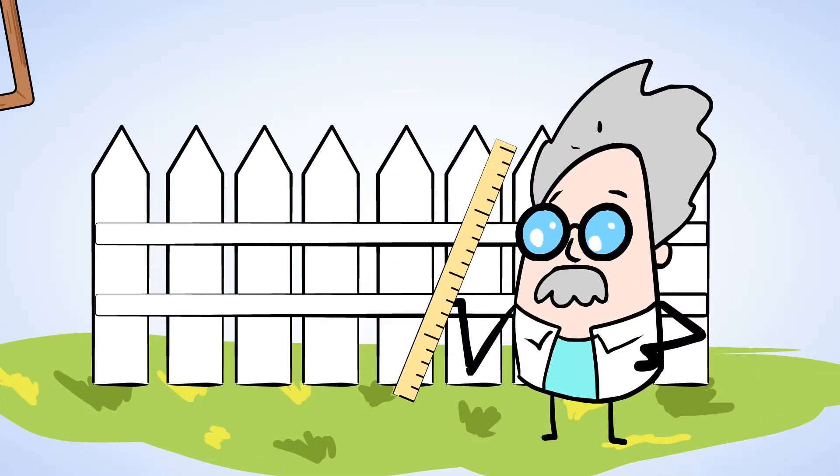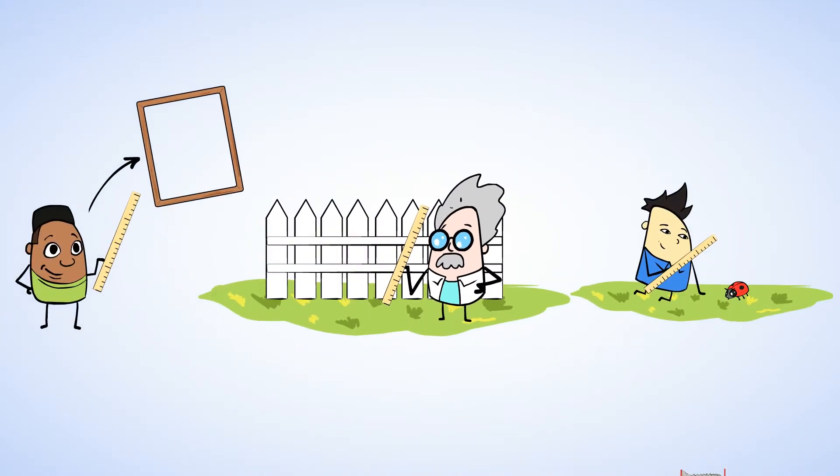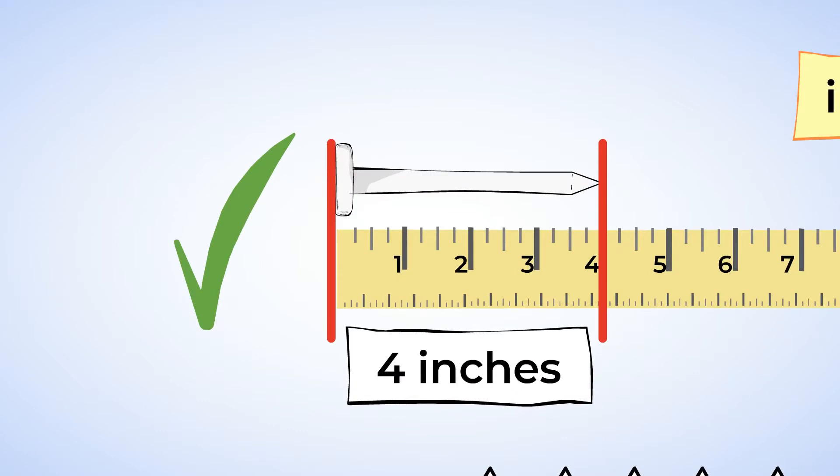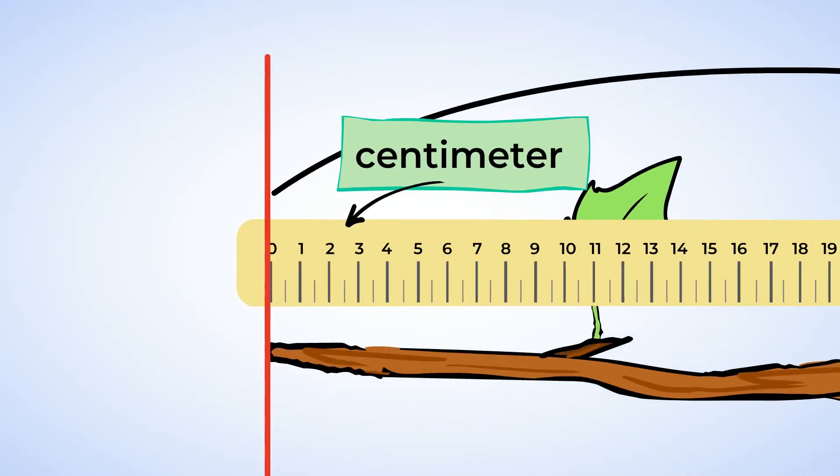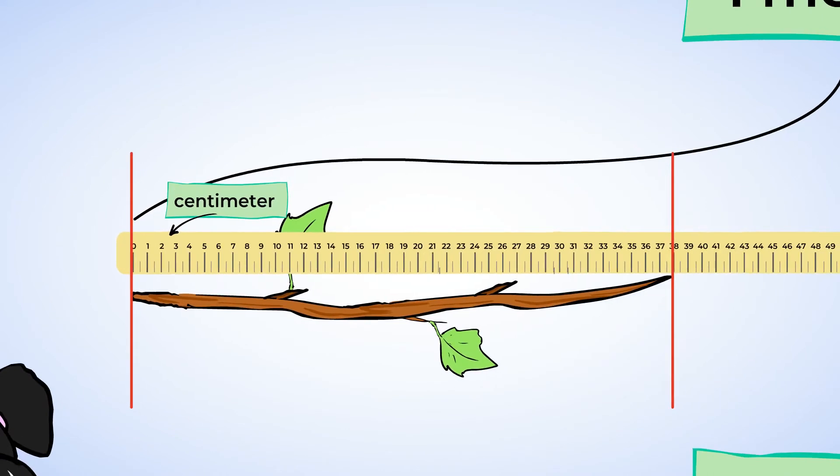Whew! That was a lot of measuring, but you did a great job today. You measured all sorts of things in the backyard. We learned that one of the most important parts of measuring is making sure that the object is lined up all the way to the left, or if there's a zero mark on the measuring tool, we can align the object with that mark. Then we could see where the object ended on the measuring tool, making sure that we are looking at the farthest point on the end of the object.